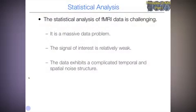The statistical analysis of fMRI data is challenging. It's a massive data problem, and so it's sort of like one of these modern big data problems that's facing statistics today. Also, the signal of interest is relatively weak, and the data exhibits a complicated temporal and spatial noise structure. So throughout this class, we're going to start trying to discuss these different things and try to understand how we can analyze fMRI data using statistics.